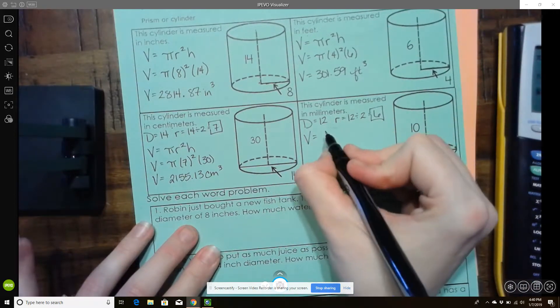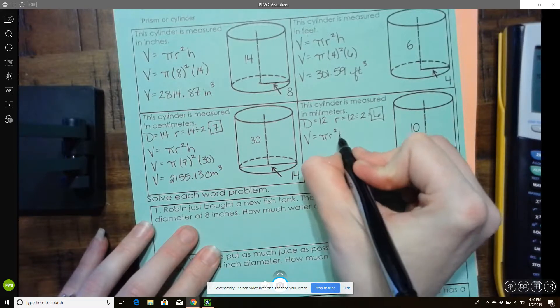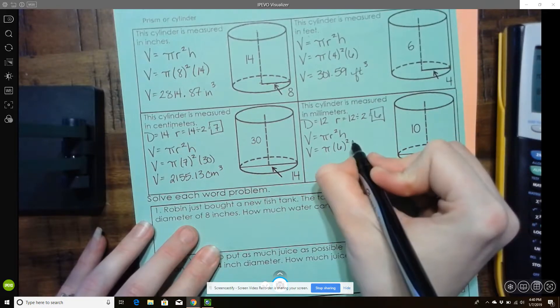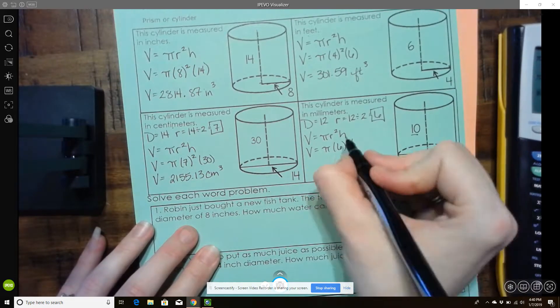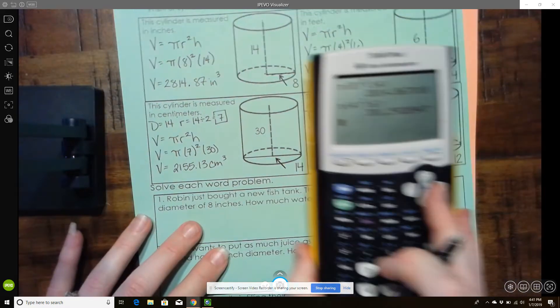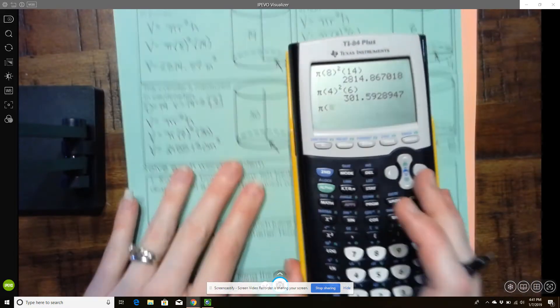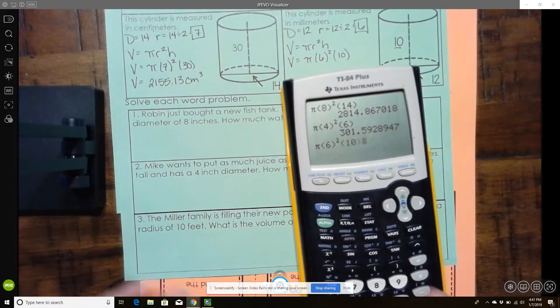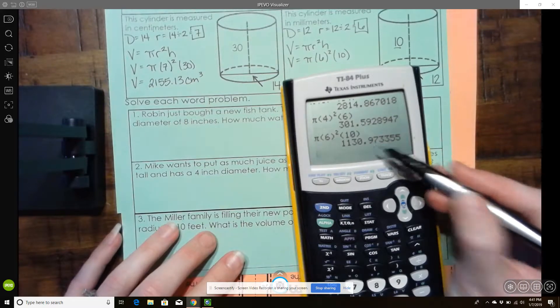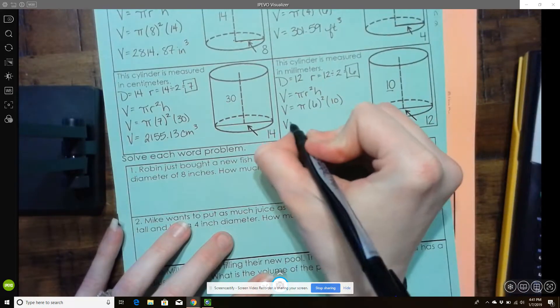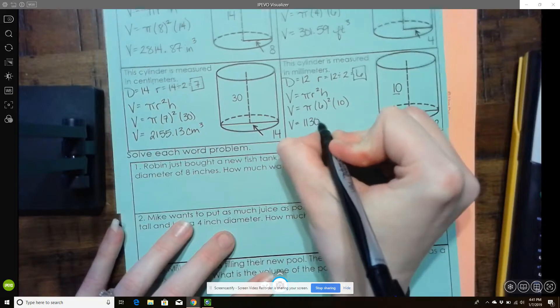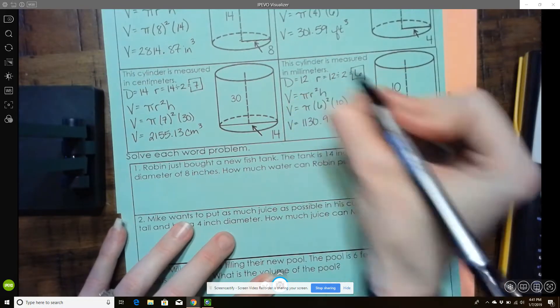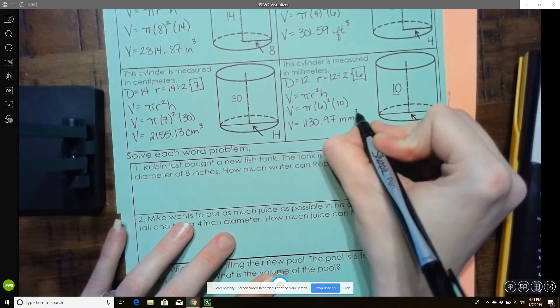All right, now my formula. So volume equals pi r squared h. Plug in what I know. The radius is 6 and the height is 10. So I can do it again this way. Pi times 6 squared times 10. Rounding to the hundredths. So my answer would be 1,130.97. This is millimeters, so millimeters cubed.